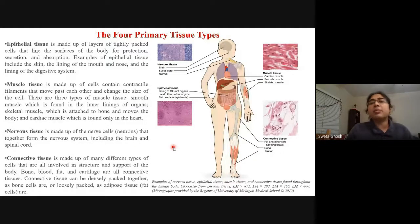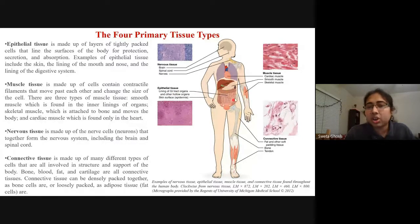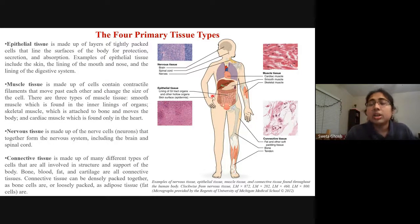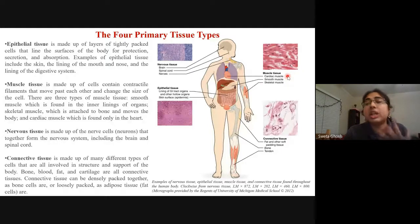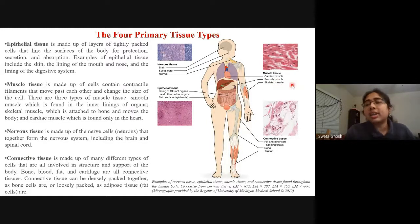The four primary tissue types and where they are found: epithelial tissues line the GI tract, other organs, and skin surfaces. Nervous tissues are found in the brain, spinal cord, and nerves. Muscle tissues include three different types — cardiac, smooth, and skeletal muscles. The heart is majorly dependent on cardiac muscles, which must function properly as they are critically important.